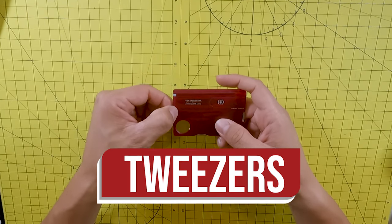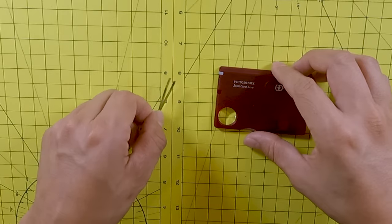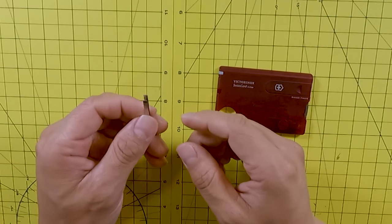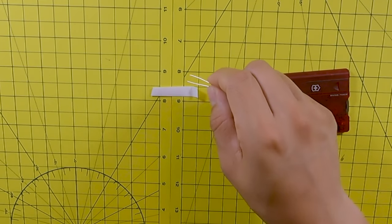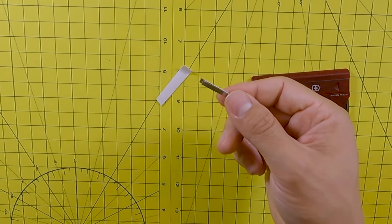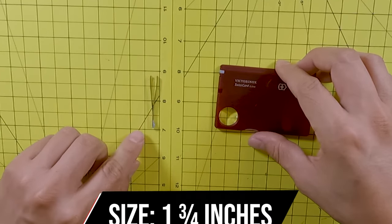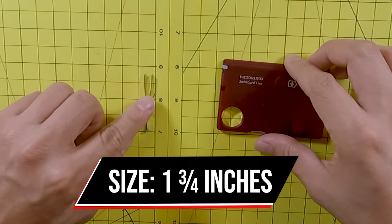The next tool we're looking at is the tweezers. Now the tweezers are also stainless steel. You can use them for many purposes as well whether it is to remove a splinter or a hair or to grab a hold of a micro screw. Many uses for this in general. The size of the tweezers is one and three quarters of an inch.